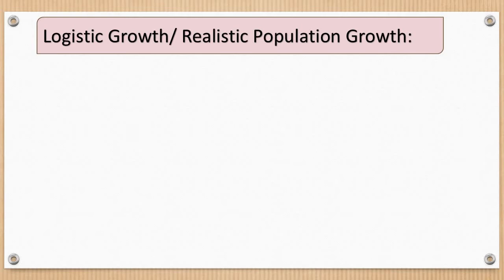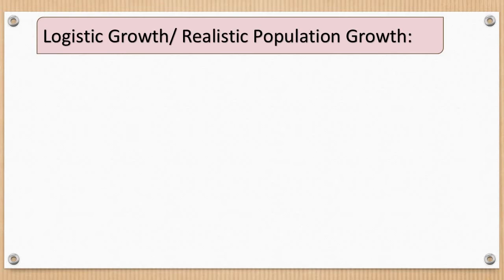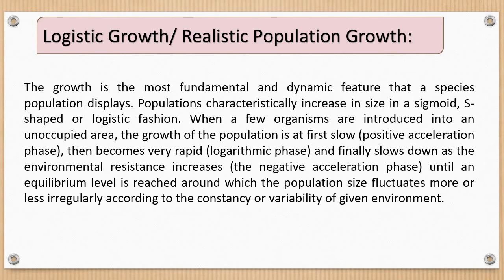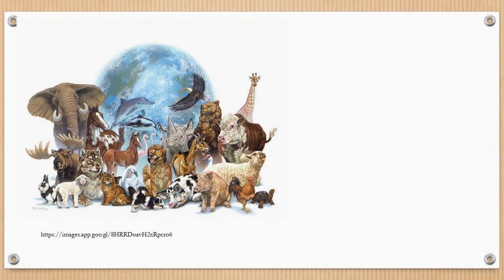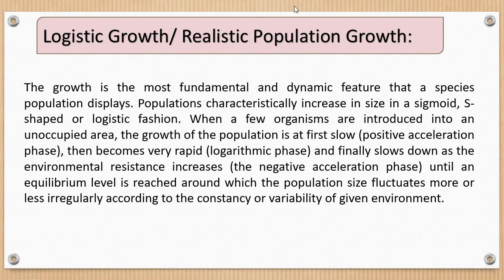These conditions are rare in nature. When resources are limited, there is a limit to the number of individuals that can occupy the habitat, and population growth is affected. Since resources for growth of most animal populations are limited, they become a limiting factor, and so the logistic growth model is also referred to as realistic population growth.